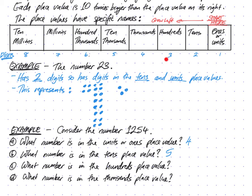What number is in the hundreds place value? The third place across - that's 2. What number is in the thousands place value? The thousands is the fourth digit across - that's 1.